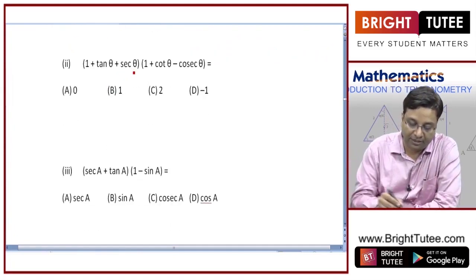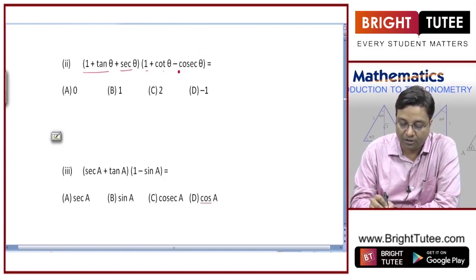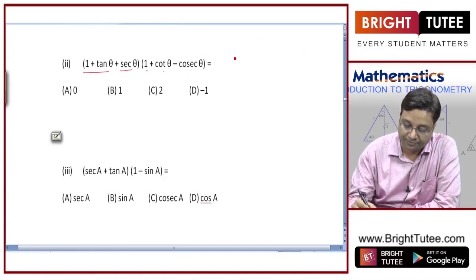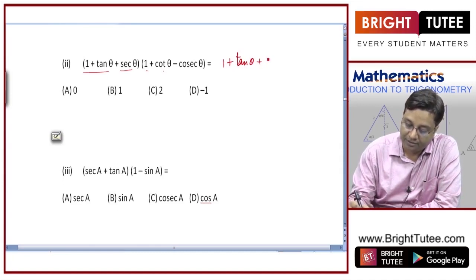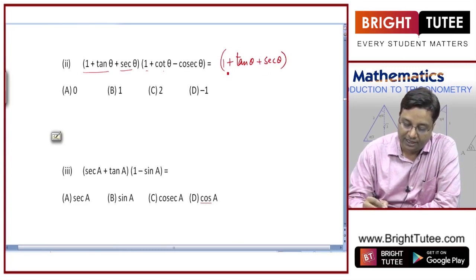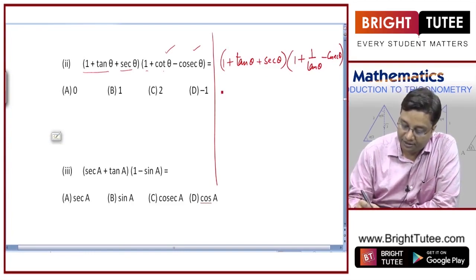Next MCQ: evaluate (1 + tanθ + secθ)(1 + cotθ − cosecθ). Let's write the second bracket in terms of tan: cot θ equals one by tan θ, so the second bracket becomes one plus one by tan θ minus cosecant θ. Taking tan θ as LCM, this becomes (tan θ + one minus tan θ · cosecant θ) divided by tan θ.